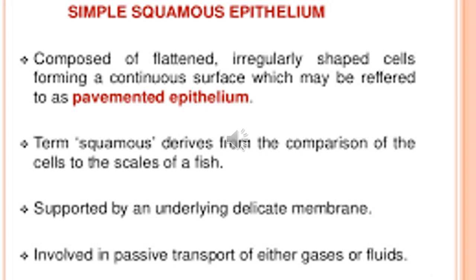The common examples are: when it lines the blood vessels it is called endothelium; when it lines body cavities like the pleura or pericardium it is called mesothelium. It controls diffusion, osmosis, and filtration.